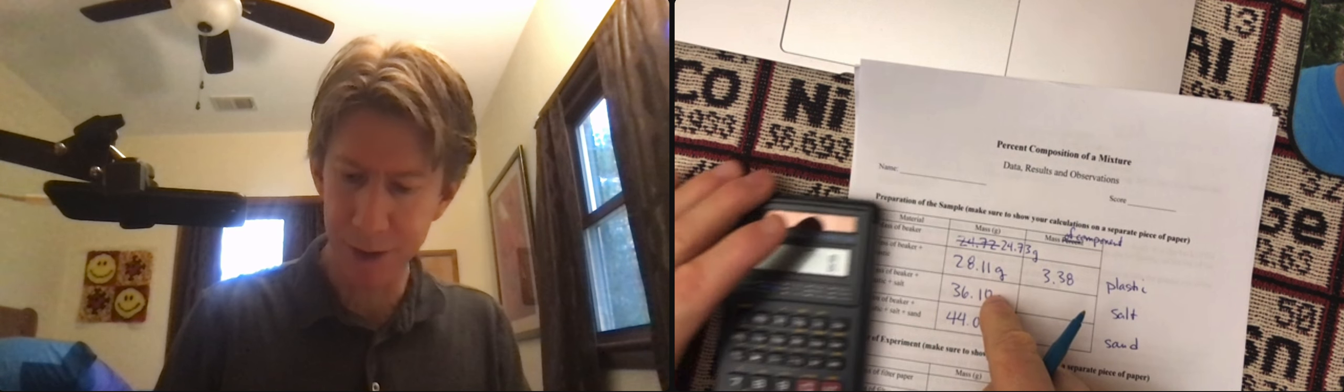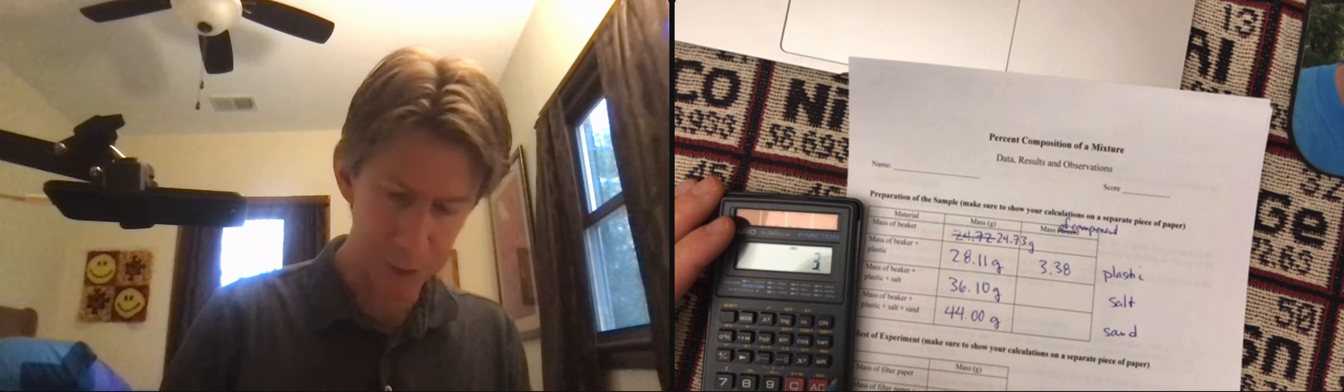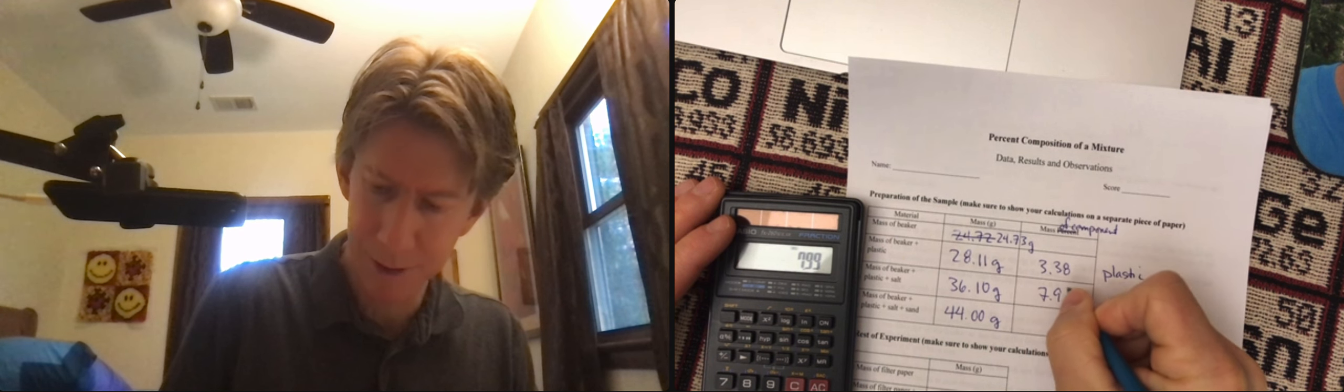Then the mass of the salt is just going to be the difference between these two. 36.1 minus 28.11. I get 7.99 grams.